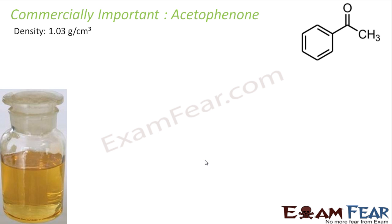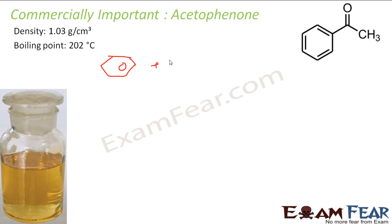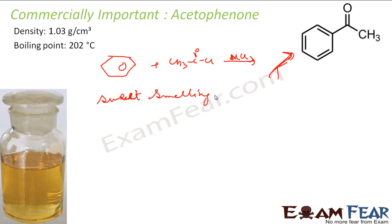The next is acetophenone. It has a density of about 1 gram per centimeter cube and a boiling point of 200 degrees Celsius. Its formula shows a benzene ring with a COCH3 group. To prepare it, one method is to take benzene and perform a Friedel-Crafts reaction in the presence of AlCl3. It is a sweet-smelling liquid, slightly soluble in water but more soluble in organic solvents.